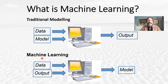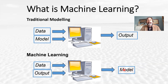Machine learning turns it around. Now all input to the computer is data — the input data and the output data. So we have to provide the machine learning algorithm with the input data and the output, and the machine learning algorithm will give us a model. Then we need to assess the model and see if we can use it for prediction.